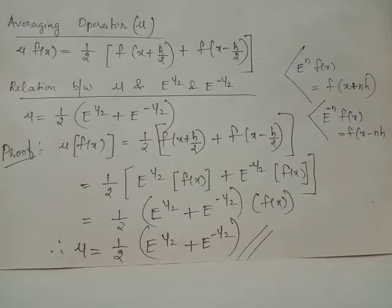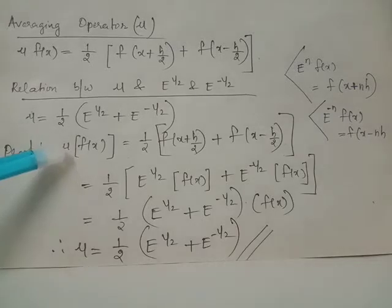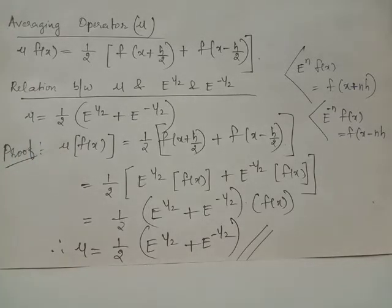Consider two numbers x1 and x2. When you evaluate the average it will be x1 plus x2 divided by 2. The case is similar here for the working of the averaging operator. Now let us discuss a few relations between difference operators. Mu equals 1/2 times E raised to 1/2 plus E raised to negative 1/2. When you give f(x) as input to operator mu, the averaging operator, the output displayed will be 1/2 times f(x + h/2) plus f(x - h/2), where h is the interval of differencing.